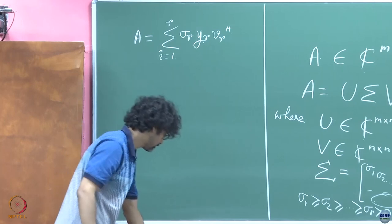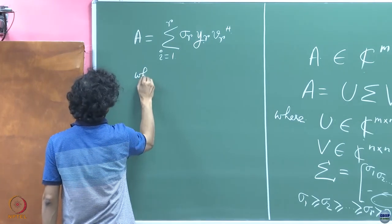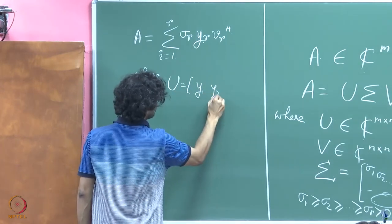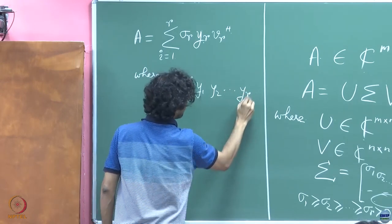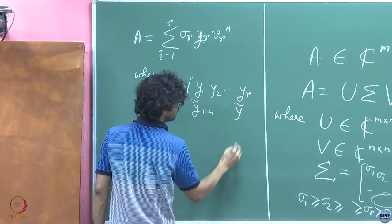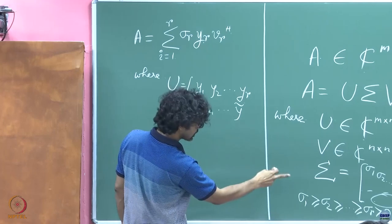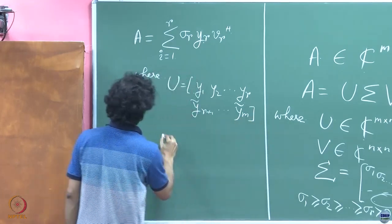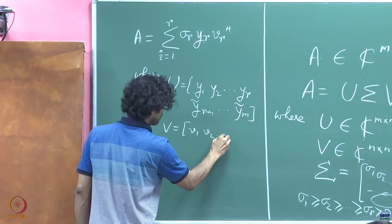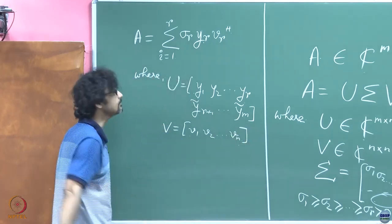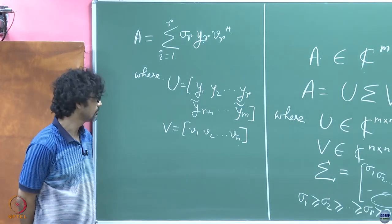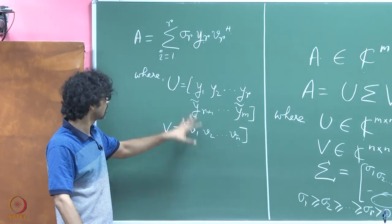I think the other day I actually denoted these by yᵣ's. So U equals [y₁, y₂, ..., yᵣ, ỹᵣ₊₁, ..., ỹₘ] — U is of size m. And V equals [v₁, v₂, ..., vₙ].